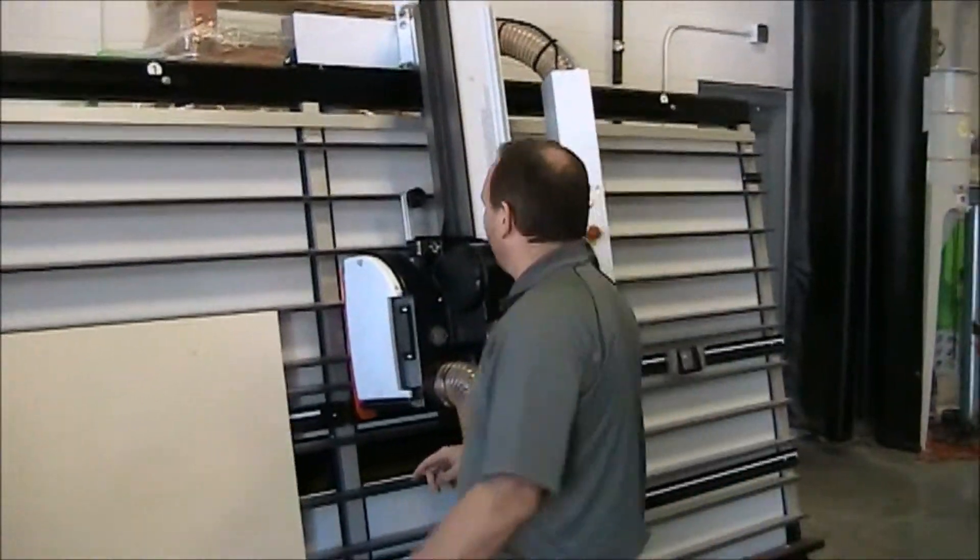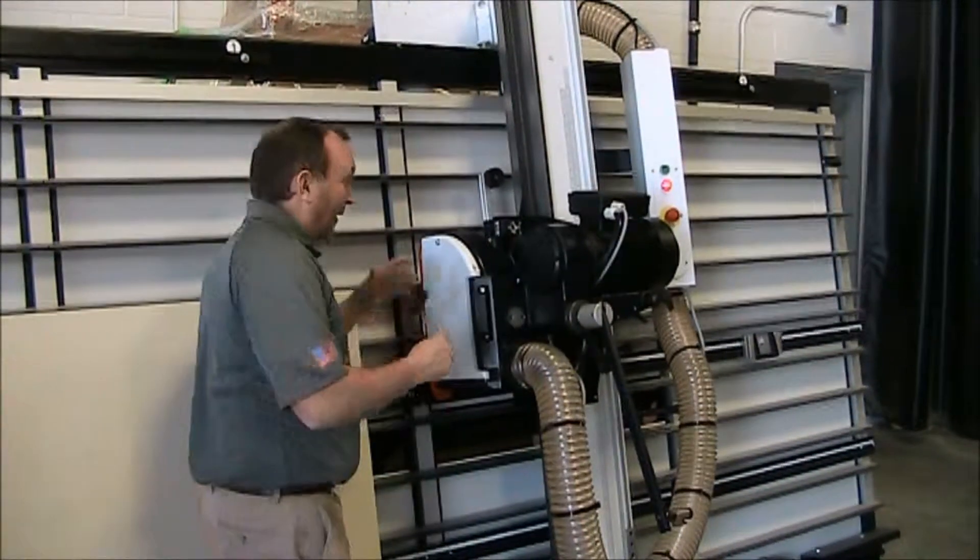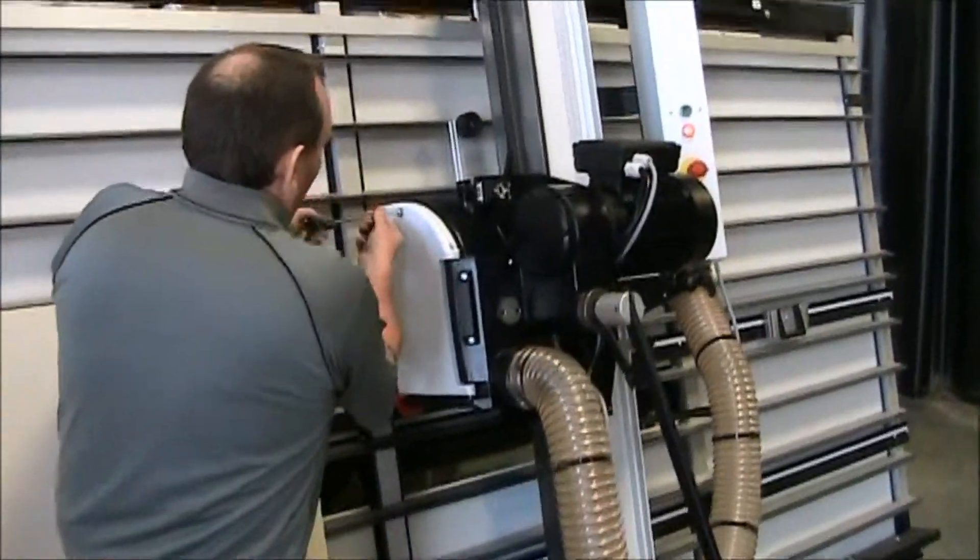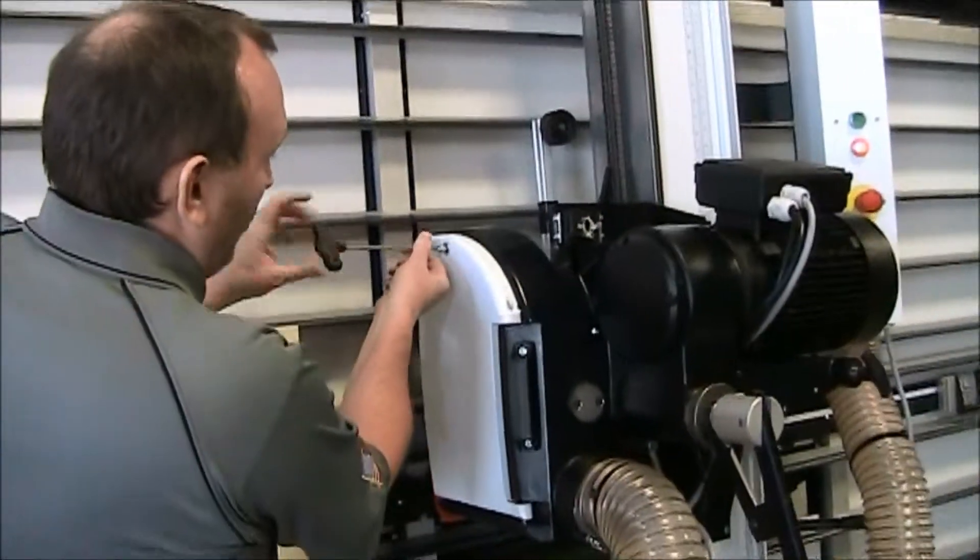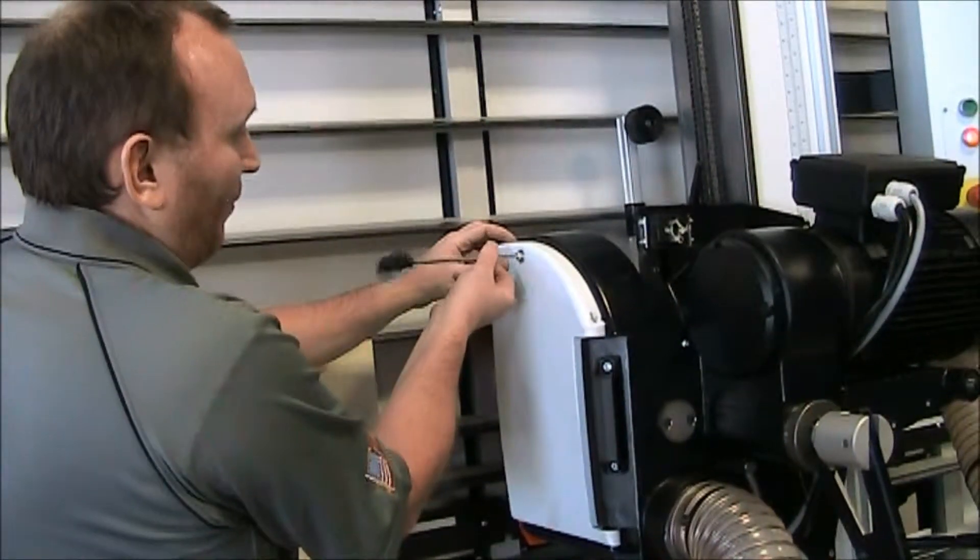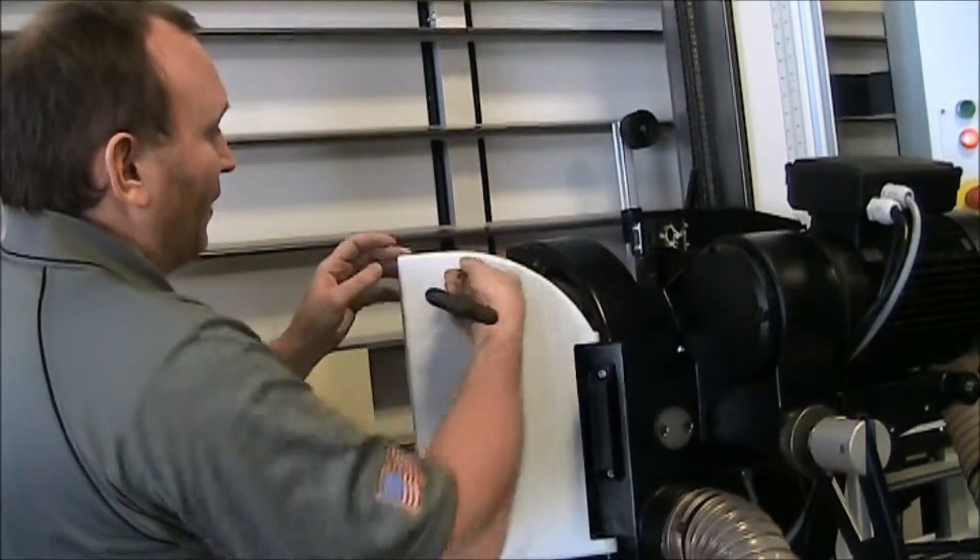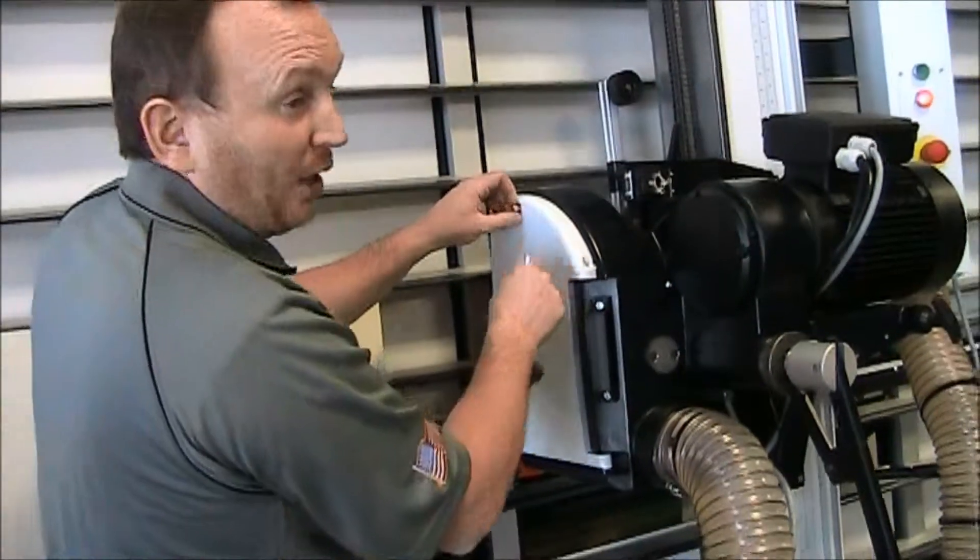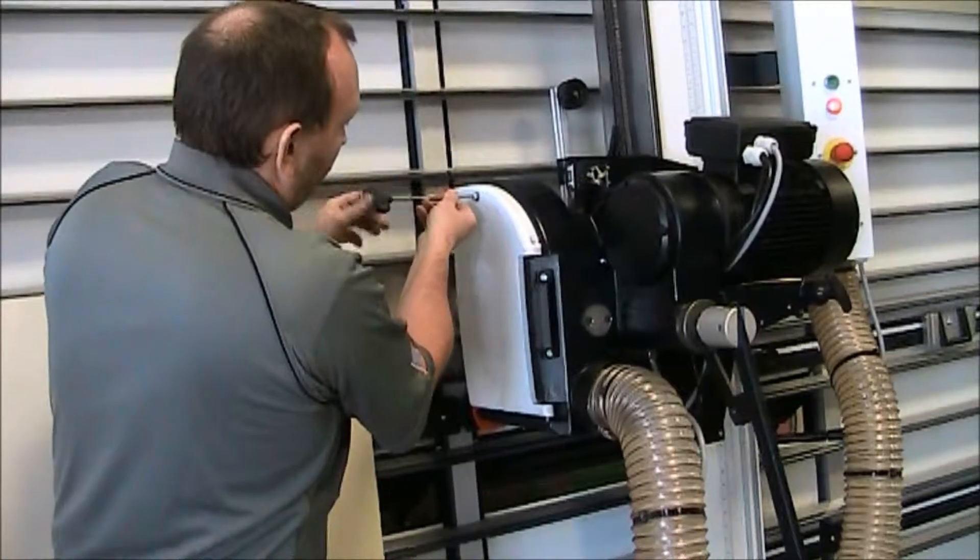One other micro switch that can sometimes be a catch by somebody is basically this one right here. It's in your blade box. And I'm not going to open this all the way. We'll come back here in just a minute and talk about blade changes. But it's basically in here and there's a small micro switch. So if this door is open or loose a little bit, the machine will not start also.